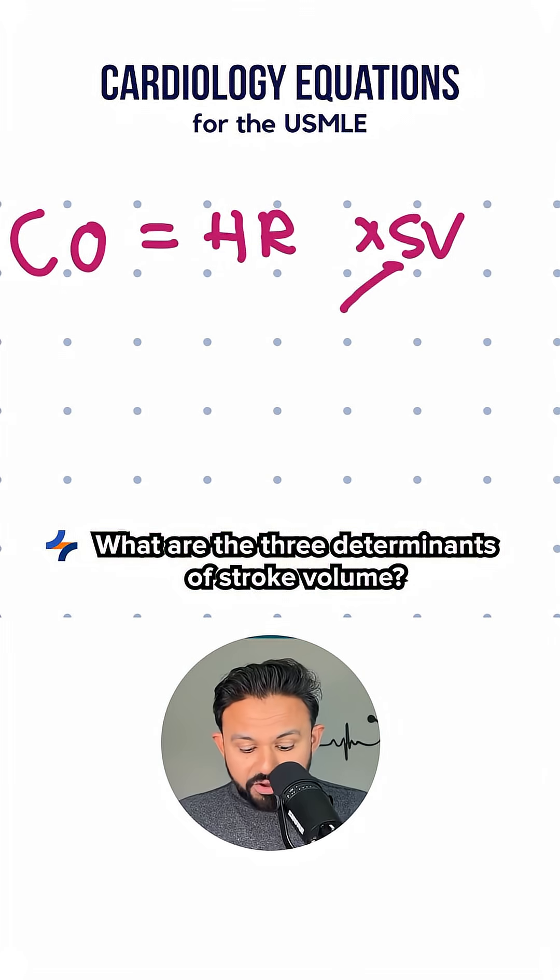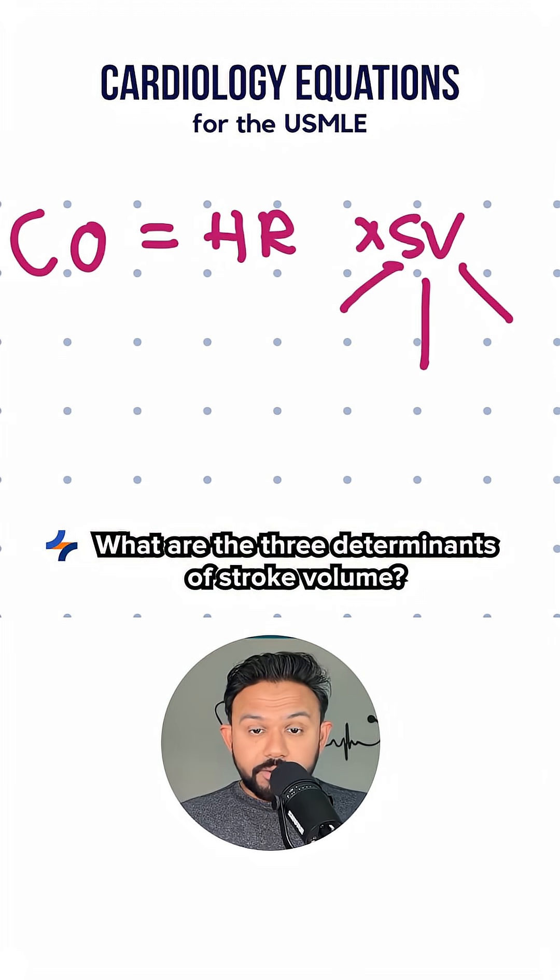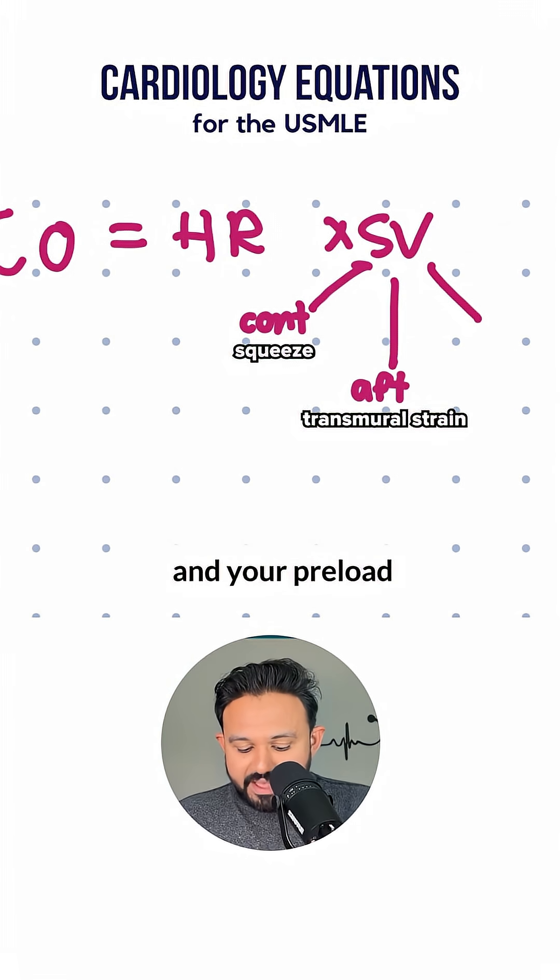Now, the USMLE can ask you, what are the three determinants of stroke volume? That is going to be your contractility, your afterload, and your preload.